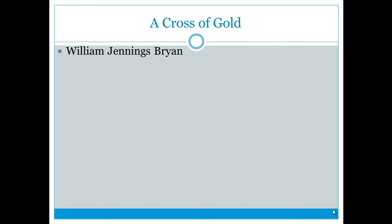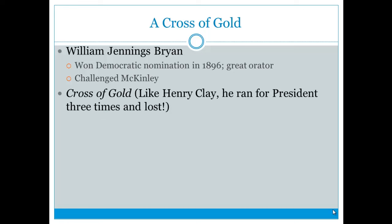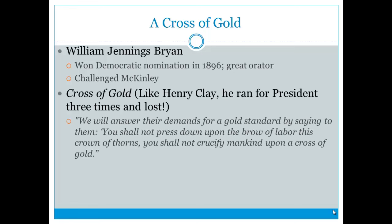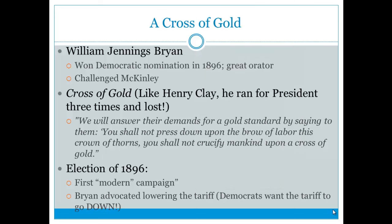William Jennings Bryan won the Democratic nomination in 1896 and was a great orator who challenged Republican McKinley. He's known for his famous Cross of Gold speech, where he said at the Democratic convention: 'You shall not press down upon the brow of labor this crown of thorns. You shall not crucify mankind upon a cross of gold.' He was nominated at age 36, the youngest person nominated by a large political party, and advocated lowering the tariff and the 16 to 1 silver ratio. However, McKinley wins the election.